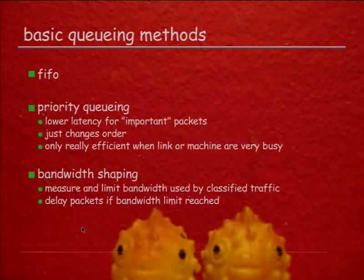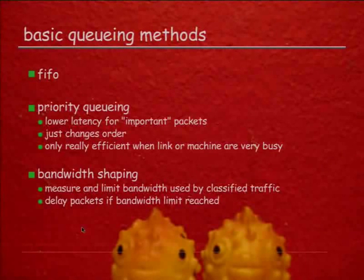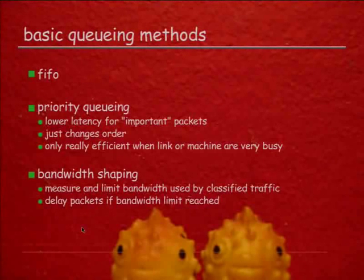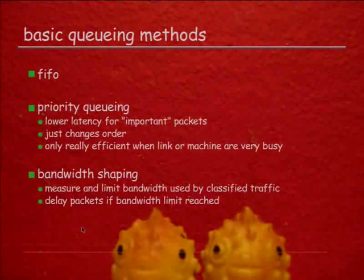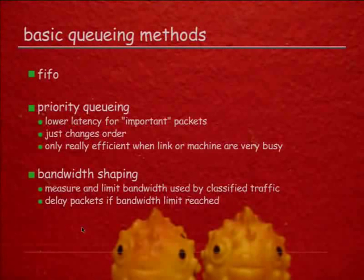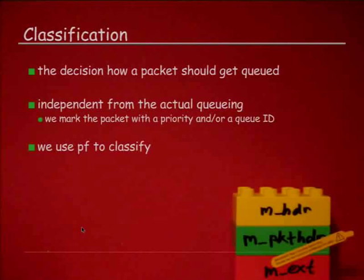It becomes really important when you're overloaded, because then the higher priority packets are being processed while the low priority packets are being processed late or actually dropped. The other part people care about is bandwidth shaping, where you actually have to measure the bandwidth taken up by a certain class of packets and delay sending those out if you're exceeding the configured rate. Delaying makes things a little more complicated.